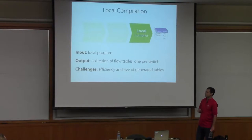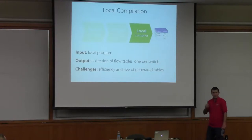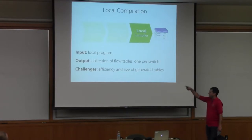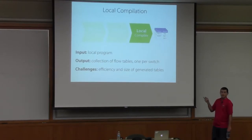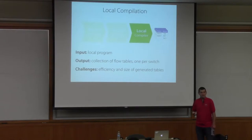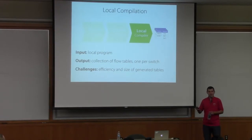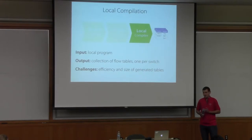The input to the local compiler is a local Netcat program—one that doesn't contain dup. Such programs denote functions from packets to sets of packets; we can ignore histories because there are no dups, so we never construct a history greater than size one. The output is a collection of flow tables or forwarding tables, one for every switch in the network. The main challenges are speed—the programs are huge—and we also want the tables to not be too large, since memory for these tables is a precious resource on most switches.